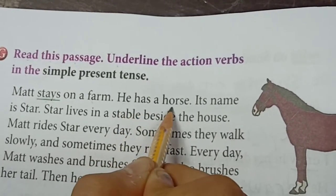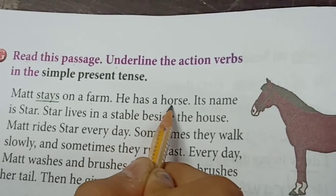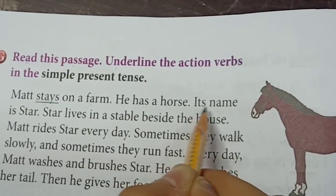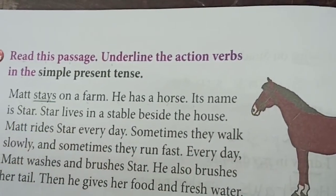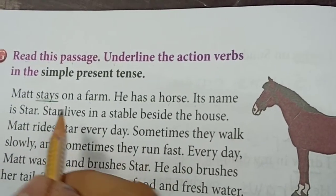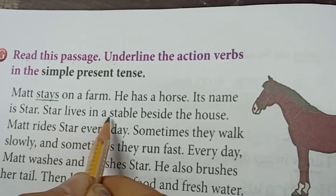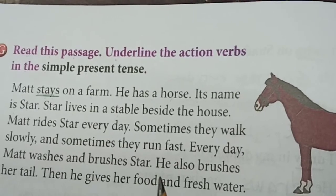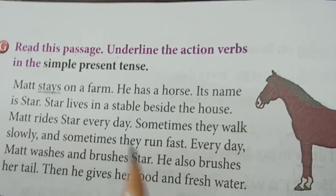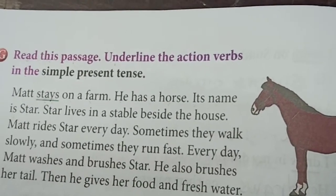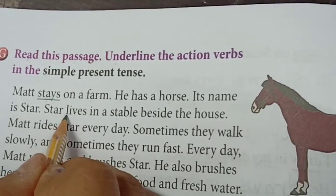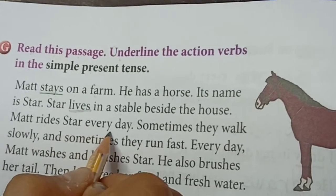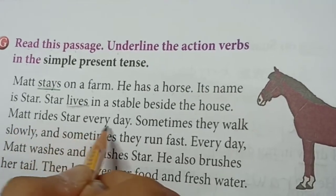'He has a horse.' Is there any action verb? No. 'Its name is Star.' 'Star lives in a stable beside the house.' Here 'lives' is an action verb — it shows an action. 'Matt rides Star every day.' Here 'rides' is an action verb.